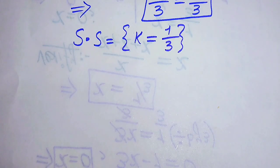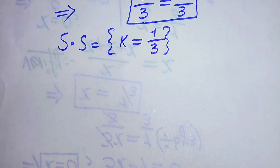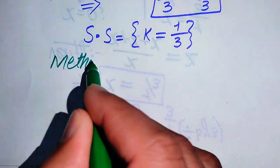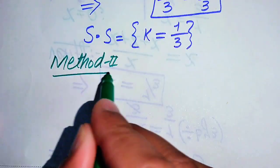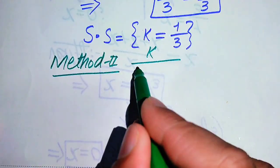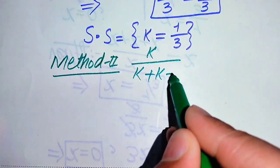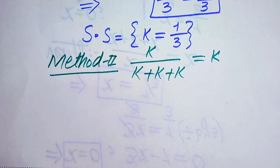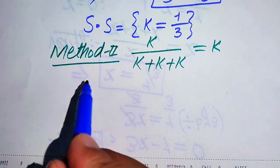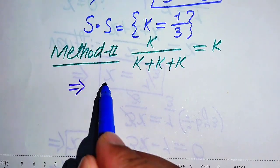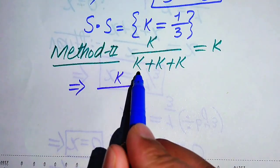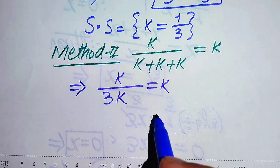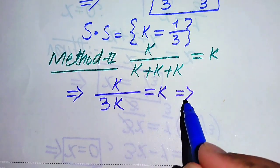Now we solve this problem using the second method. We copy down the equation: k divided by (k + k + k) equals k. In this quick method, we simplify the denominator: k divided by 3k equals k.